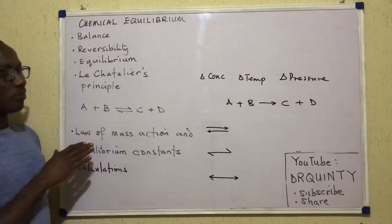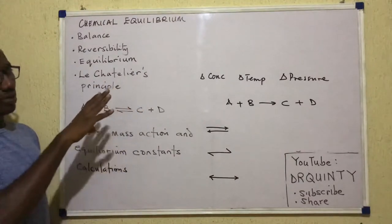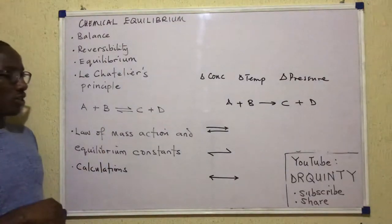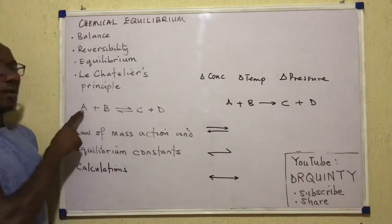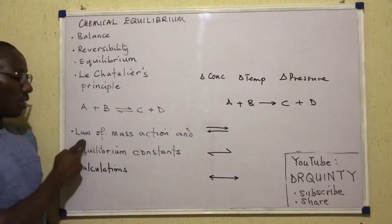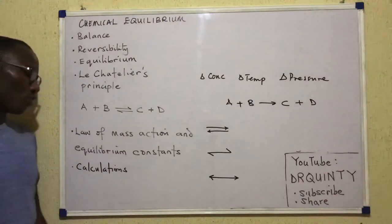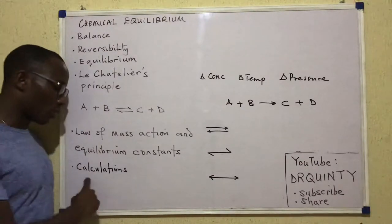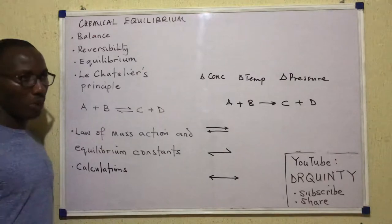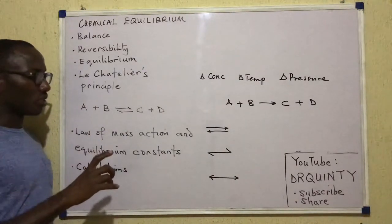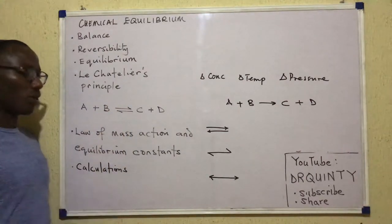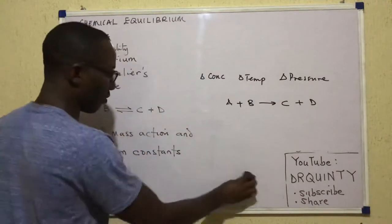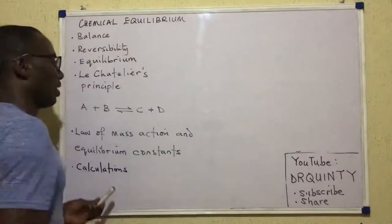Having mentioned those, I will talk about these Le Chatelier principal factors — all three of them. I will tell you how they affect a reversible reaction. We will do that right away, and when we are done with that, we will talk about the law of mass action and how to write equilibrium constants. There will be a second video on chemical equilibrium where I will do calculations on chemical equilibrium.